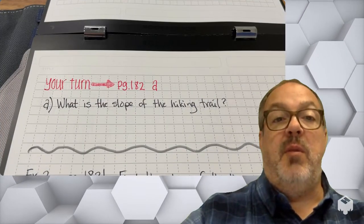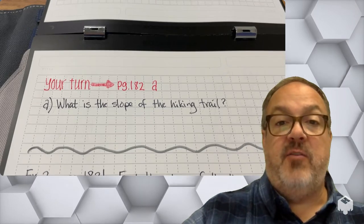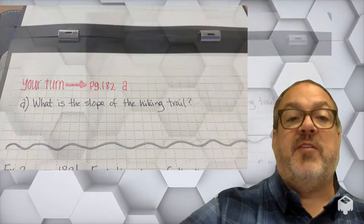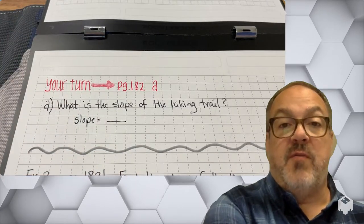Try problem A on page 182. Pause the video, come back to it and check your work with mine. So our slope is going to be our rise over our run.